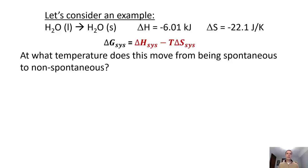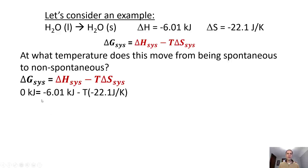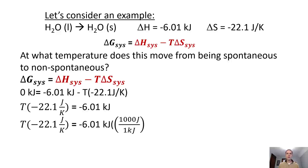Now we might be curious: at what temperature does this move from being spontaneous to non-spontaneous? We can take that equation and use it in a slightly different way. The point where we go from positive delta G to negative delta G means we have to pass through zero. So we can take delta G of the system, set it equal to zero, put in our values, and solve for temperature. We have to pay attention to the same unit issues — joules versus kilojoules.